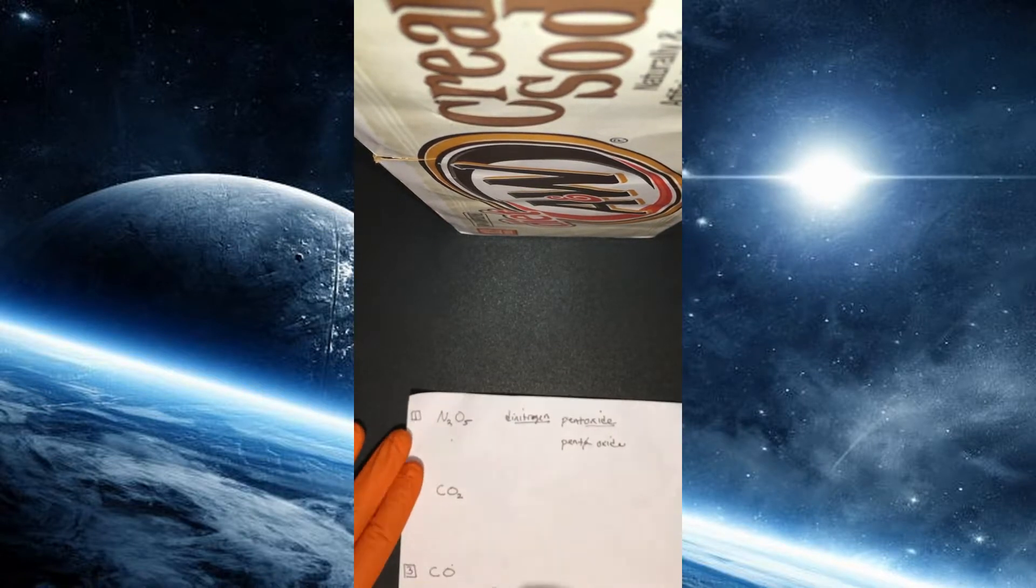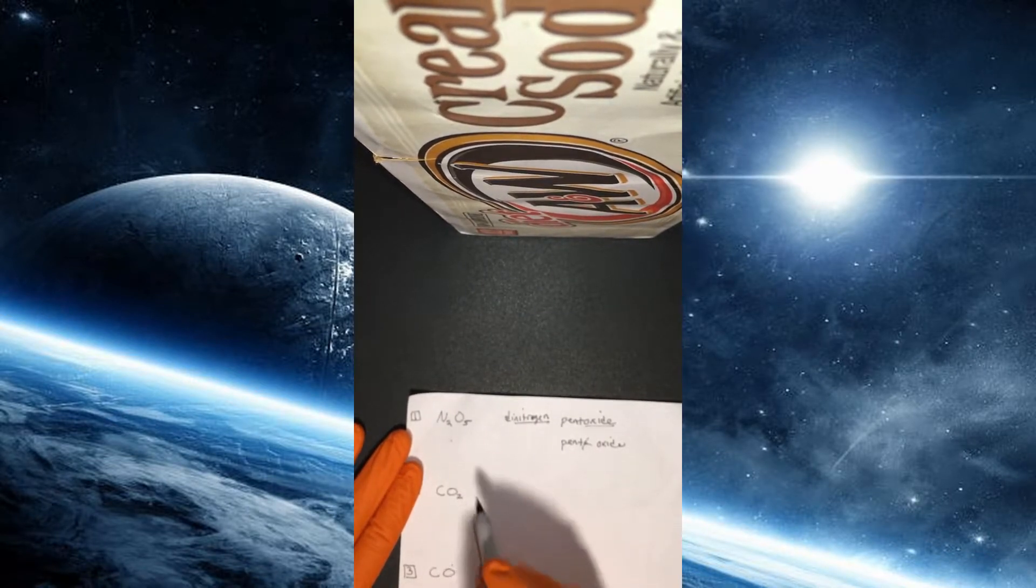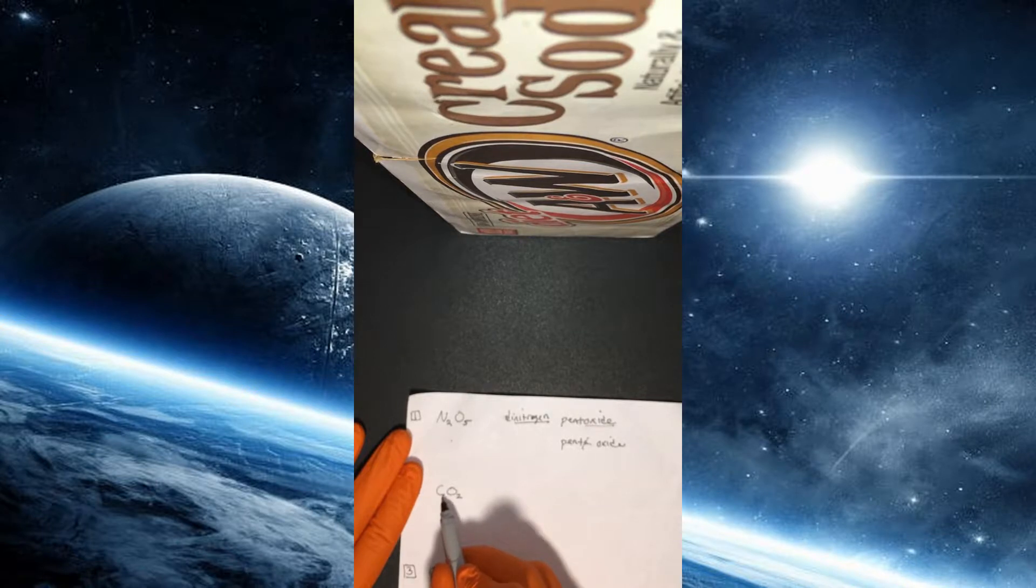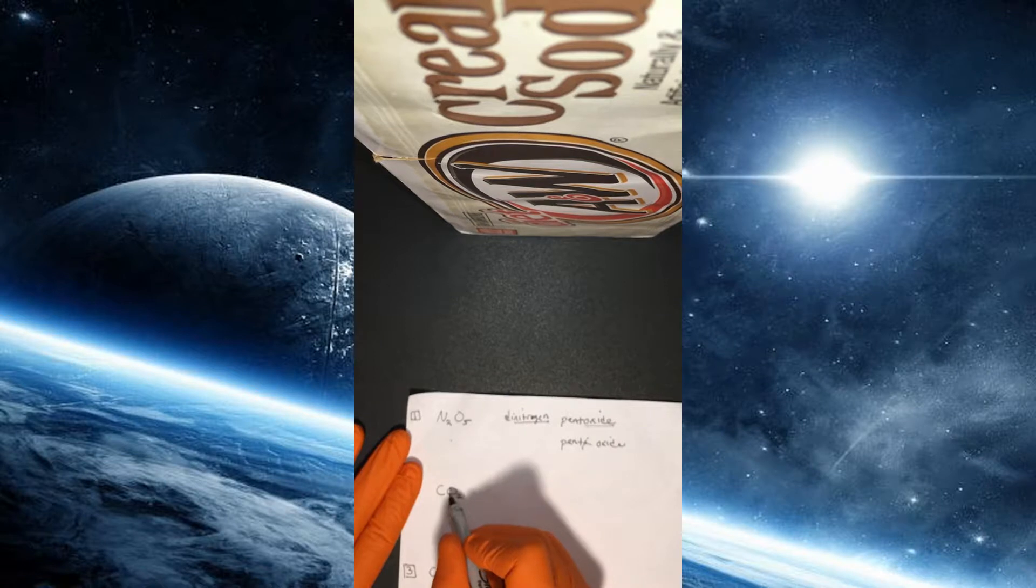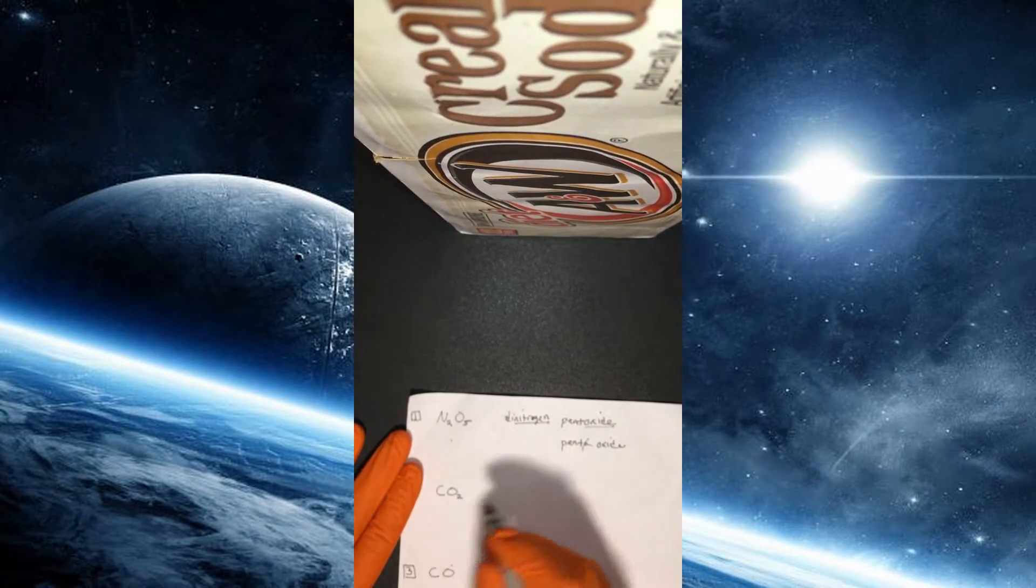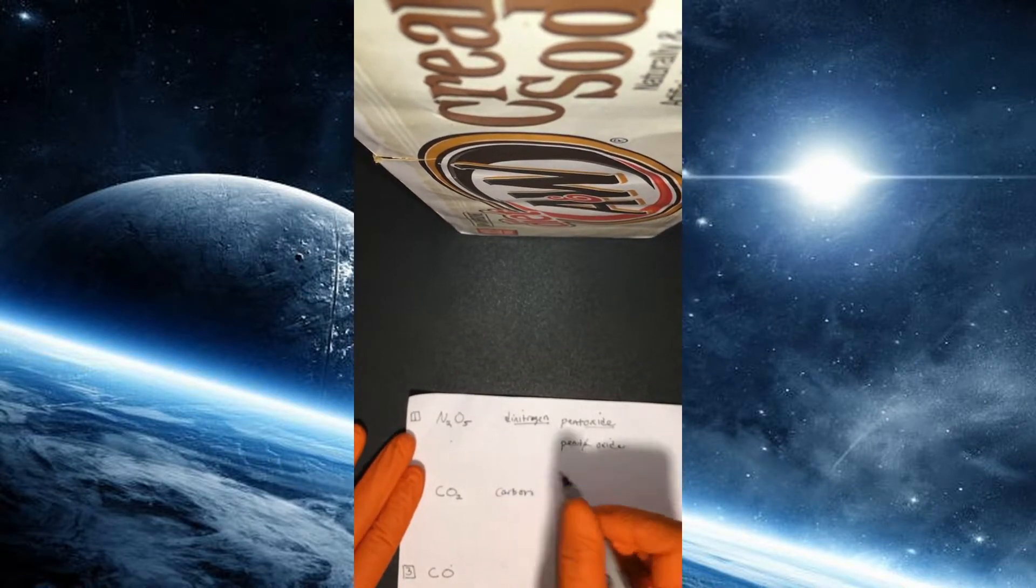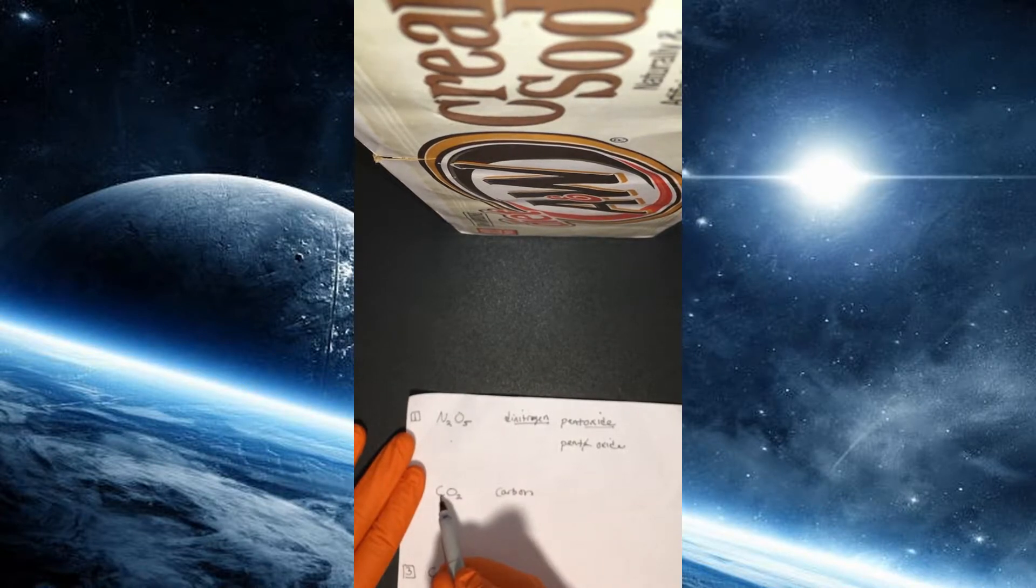All right, our second example is CO2. We want to name this one, and you might already know what this is based on a biology class. But in this case, our first element, which is carbon, only has one of them. So when the first element only has one, then we don't actually put the mono, and that's only when it's the first one. So instead of saying monocarbon, we would just say carbon. No mono because it's the first element. If it were the second element, we would have to put mono.